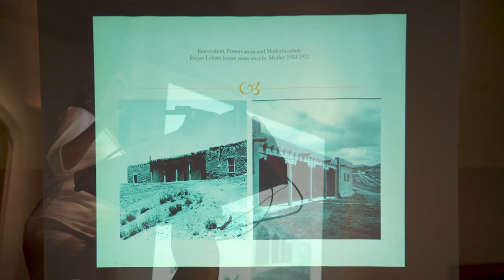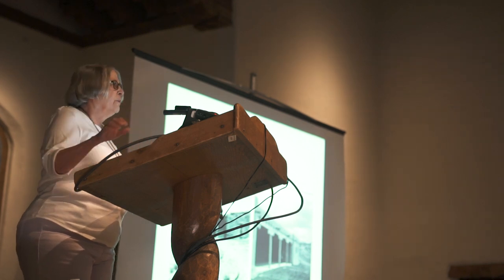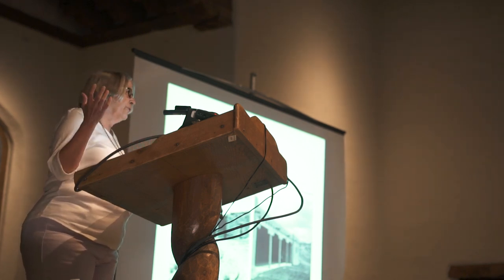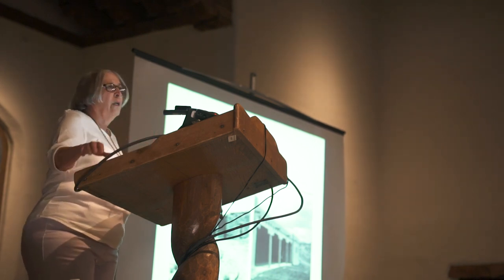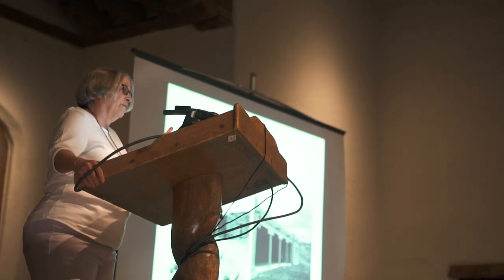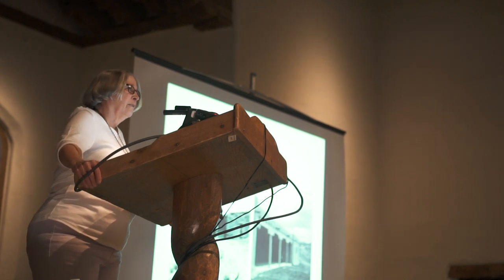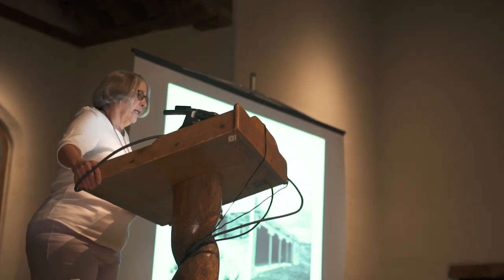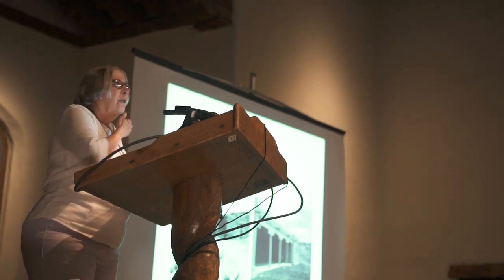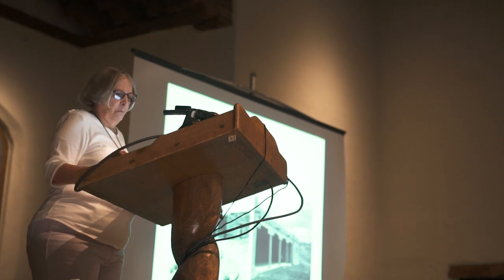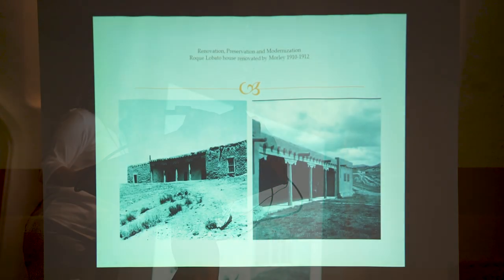We have to understand what Santa Fe was in 1912 to 1915. It was a wreck — it had no infrastructure to speak of, barely any sewer systems, no paved roads. There were lots of properties like the Roque Lovato house before it was repaired throughout Santa Fe. It was really in danger of becoming a total backwater, and that was what inspired this 1912 planning group.